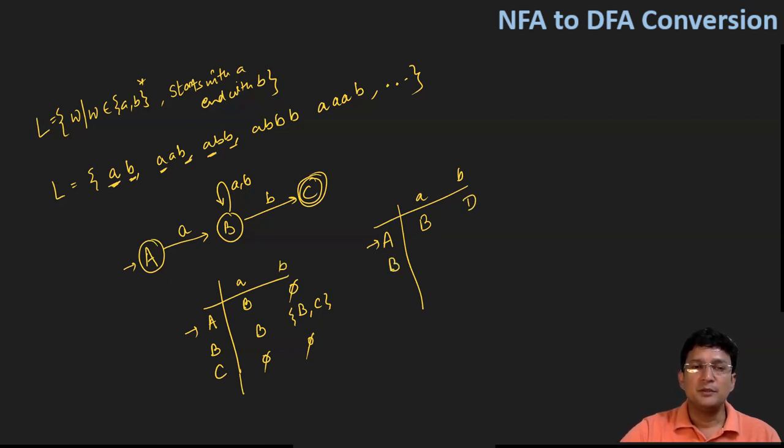Now the new state is B. On B with small a you go to B and C both, so you will make a new state which is BC. So there are two new states which have already come: one is the D state and another one is the BC state. I'll show the transition from both of these states.